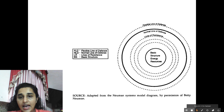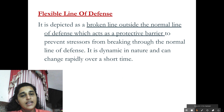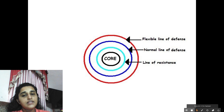There is an outer dotted circle — that is the flexible line of defense. It is depicted as a broken line outside the normal line of defense, which acts as a protective barrier to prevent stressors from breaking through the normal line of defense. It is dynamic in nature and can change rapidly over a short time. So the core is surrounded by lines of resistance, which is surrounded by the normal line of defense, and that is covered by a flexible line of defense.